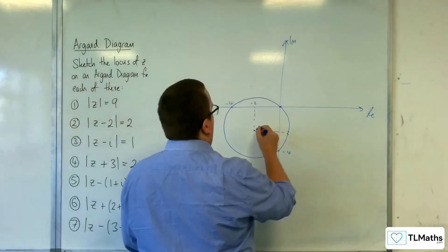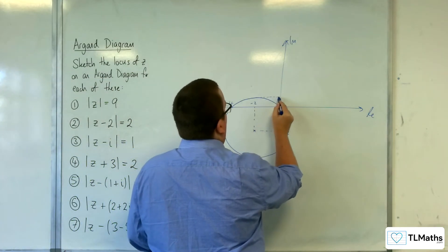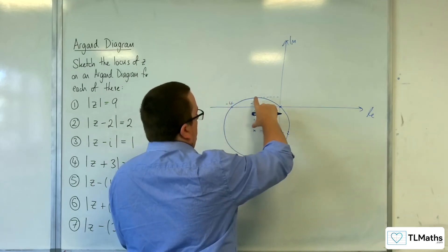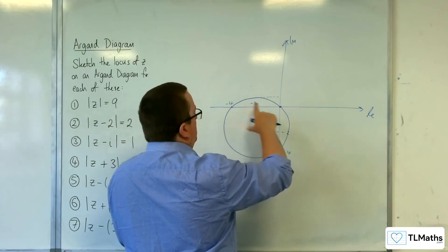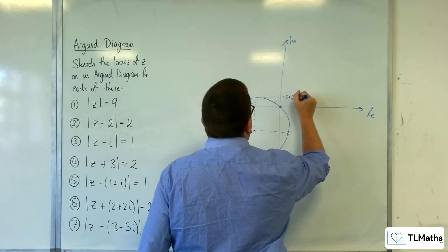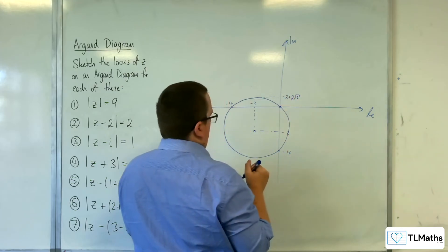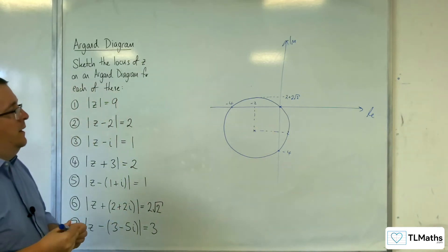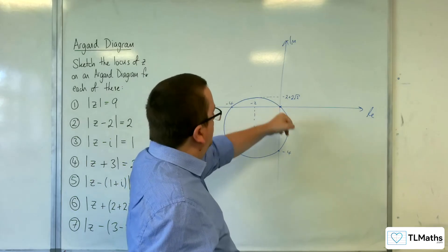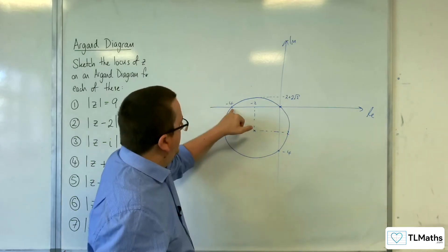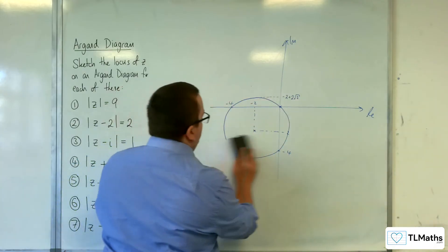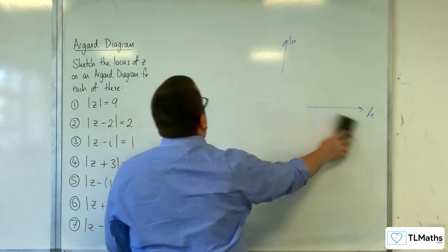So that point there would be minus 4. Because minus 2 is there in the centre, and that would be minus 4 there. If you wanted to identify the maximum point there, then that would be minus 2 plus 2 root 2. But I'm pretty sure that wouldn't be necessary. It would be enough to have sketched it going through the origin. You don't need to go overboard on your sketch.